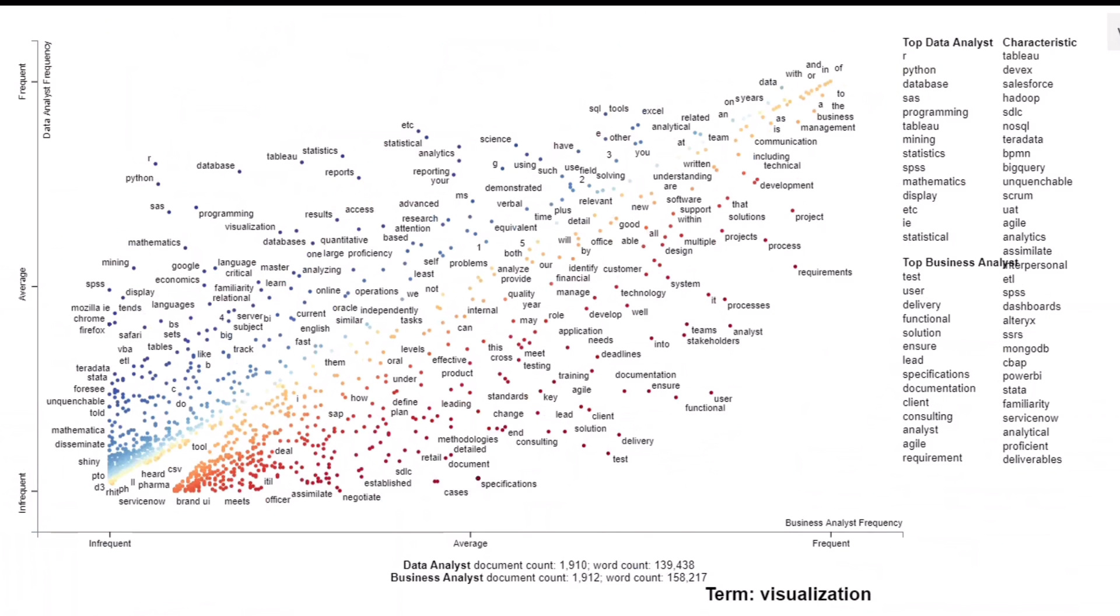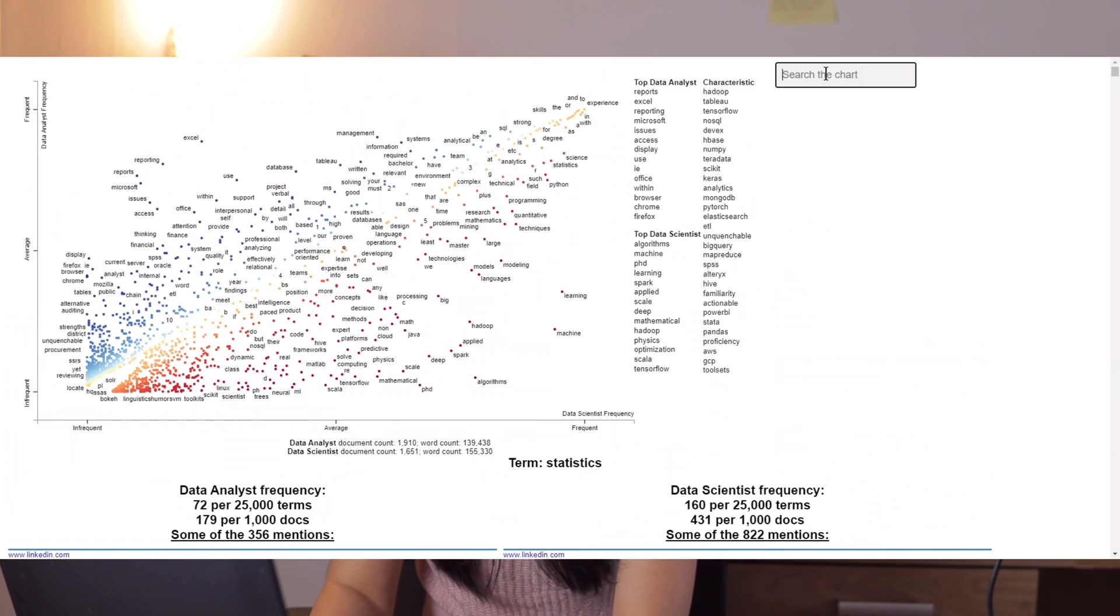Whereas for business analysts, we again mostly see terms that are a bit more qualitative and client-facing, such as solution, delivery, clients, tests, stakeholders, processes. We can even search this chart by going to search the chart.